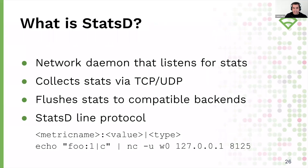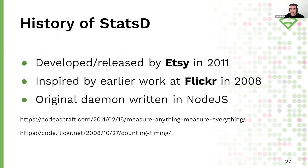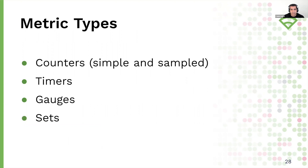StatsD is a network daemon that listens for stats. With StatsD, you can collect statistics using TCP or UDP, so you have a choice of delivery guarantees. StatsD will then flush those collected stats to any number of compatible backends like a time series database. StatsD is also a data format — a very simple line protocol, an easy interface for representing telemetry data as plain text. StatsD was originally developed out of Etsy, starting back in 2011, inspired by earlier work from the Flickr team in 2008. The original open source StatsD daemon was written in Node.js.